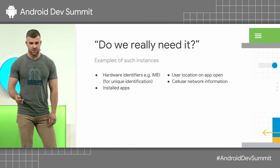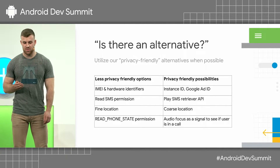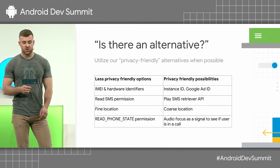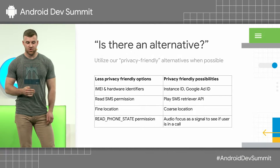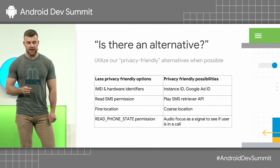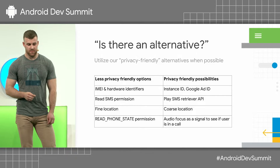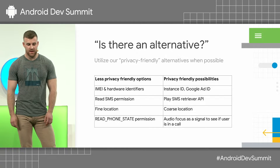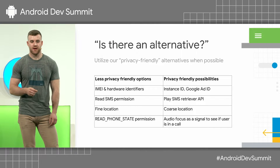You probably don't always need such information. We offer more privacy-conscious options and encourage you to use them if they fit your use case. For example, we encourage you to use Instance ID or Android ID instead of a hardware identifier such as IMEI. If you're trying to confirm a user's phone number, use the Play SMS Retriever API instead of the SMS permission, which is less granular. You could also consider only requesting coarse location instead of fine location, and if you want to see if a user is on a call, you could check for audio focus rather than requesting READ_PHONE_STATE, which gives out a lot more data.